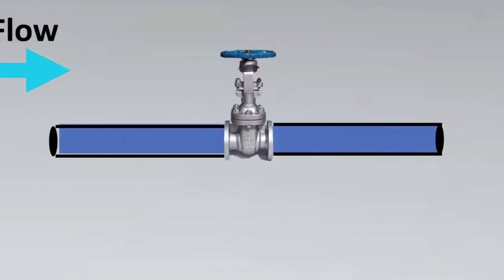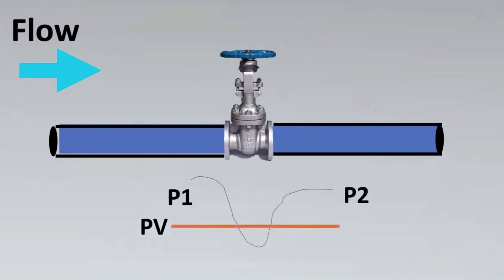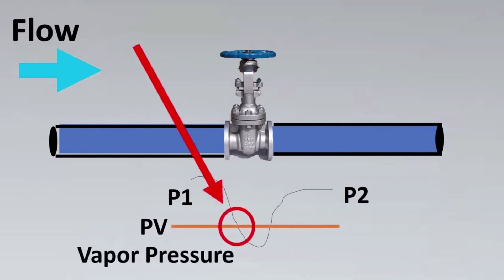Imagine this is your valve put in a line. With the flow there's some restriction, so you're going to have a DP or differential pressure created. The upstream pressure is P1 and the downstream pressure is P2. Now imagine this is your vapor pressure curve. What happens when the fluid is at this particular region - the fluid is going to change from liquid state to vapor state.